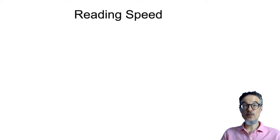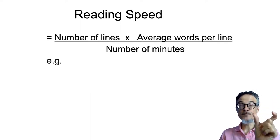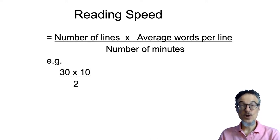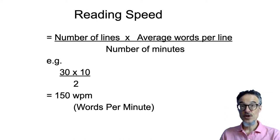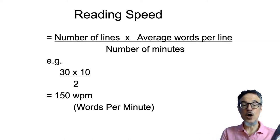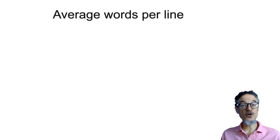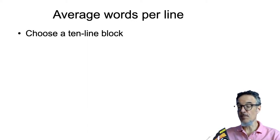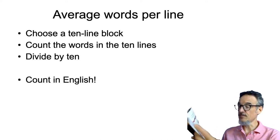And your reading speed then, we can calculate your reading speed. It's the number of lines times the average words per line divided by the number of minutes. So, for example, if you read 30 lines, if each line is 10 words long, then that's 30 times 10. That was two minutes. 30 times 10 divided by 2 is 150 words per minute. Now you may be able to just look at the text and say, oh yes, the average line is eight words. You can calculate this if you choose a 10 line block.